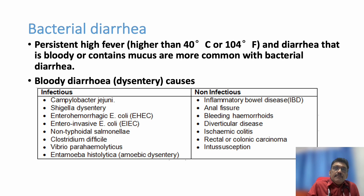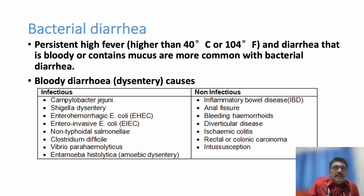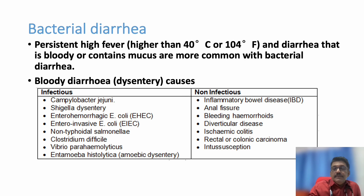Non-infectious causes can also present with acute bloody diarrhea. These include inflammatory bowel disease (IBD), anal fissures, bleeding hemorrhoids, diverticular colitis, ischemic colitis, and colorectal carcinoma. All these non-infectious conditions can present with acute bloody diarrhea. The most common cause for bloody diarrhea in the emergency room is inflammatory bowel disease and exacerbation of IBD that was previously controlled with medications.